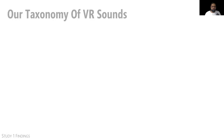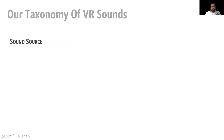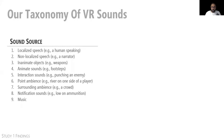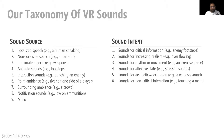This taxonomy contains two dimensions: sound source and sound intent. Sound source represents the source that produces the sound, such as a character or an object. Within this dimension, we have nine categories that describe various localized and non-localized sources of sound. Some of these categories may appear to overlap, such as interaction and notification sounds, but we have tested that they are all mutually exclusive. Beyond the source, it is also important to describe the intent of sound, since sounds from the same source may have different intents. So we have a second dimension called sound intents, containing six categories, such as sound for conveying critical information or increasing realism.